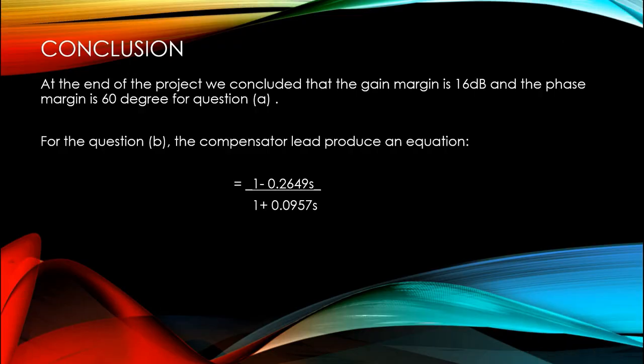Lastly, the conclusion. At the end of the project, we concluded that the gain margin is 16 dB and the phase margin is 60 degrees for equation A. For question B, the compensator lead produced an equation which is as shown below.